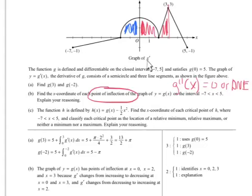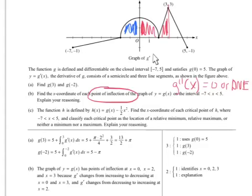The function shown is g prime. So I want to know where g double prime equals 0 or does not exist, and actually changes concavity. If this is g prime and I want g double prime, aren't I talking about the slopes of this graph? If this is g prime and I want g double prime, aren't I looking at the slopes of this graph?